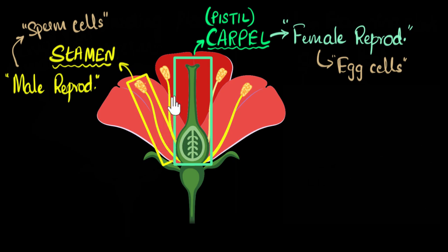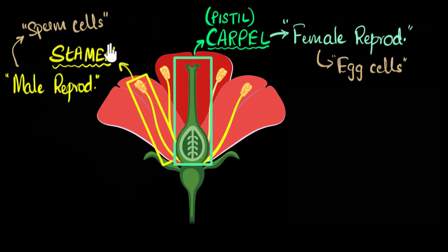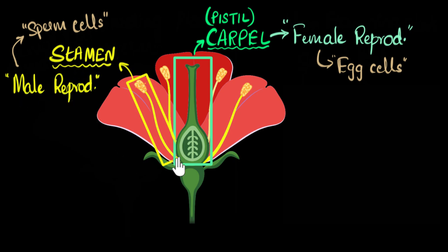One important memory tip: whenever I get confused between these names, I remember that stamen has the word 'men' in it, which helps me remember that stamen is the male reproductive part.